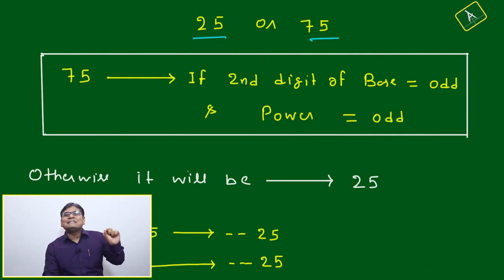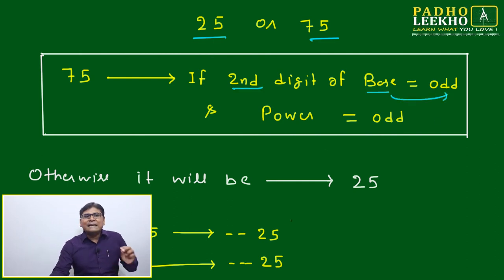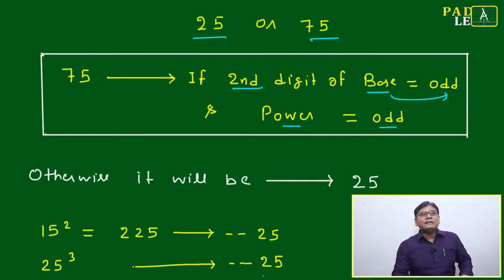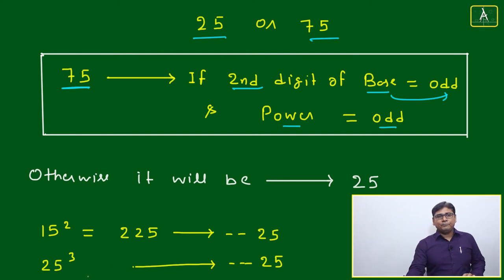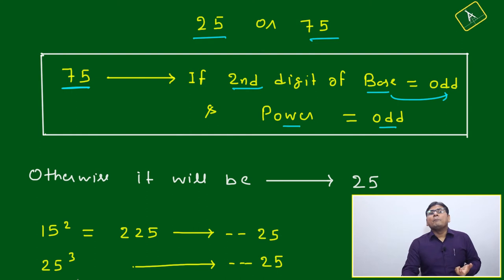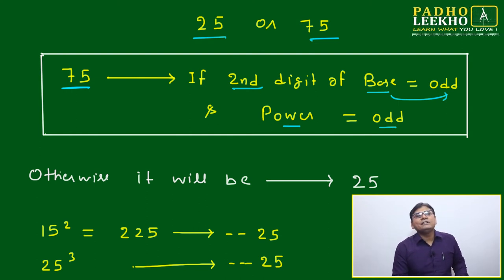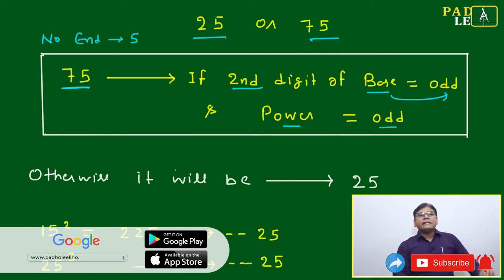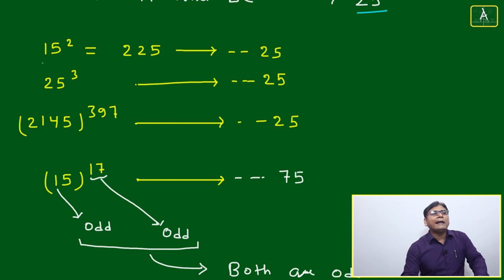For the result to be 75, the second digit of the base must be odd AND the power must also be odd — both must be odd. If either one is even, the result ends with 25. Only when both the second digit of the base and the power are odd will the number end with 75. This is the one condition to remember, since the number always ends with five by default in this session.